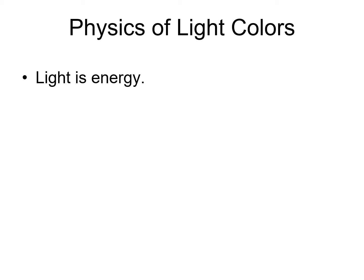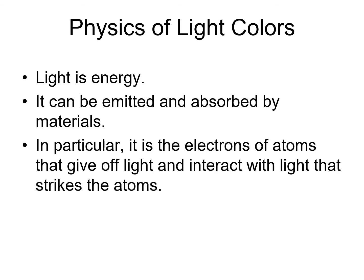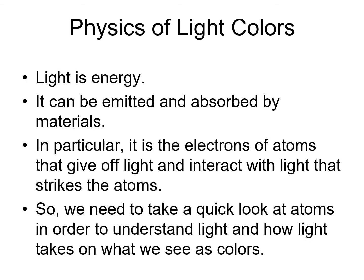Because light is energy. It can be emitted, given off, and absorbed by materials. But what's really emitting light or absorbing light is the electrons of atoms. So, if we want to understand the origin of colored lights, we have to take a quick look at how atoms work.